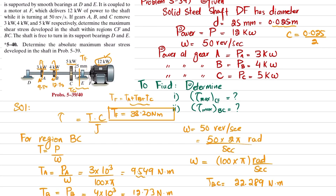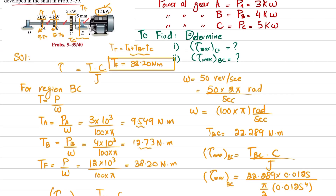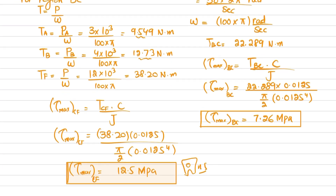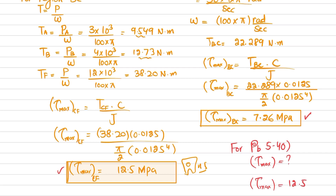Now for the second part — problem 5-40 — we need to determine the absolute maximum shear stress developed in the shaft. We have already calculated shear stress in regions BC and CF. We have found that in region BC it is 7.26 MPa, and in region CF it is 12.56 MPa. Therefore, the absolute maximum shear stress is 12.5 MPa.